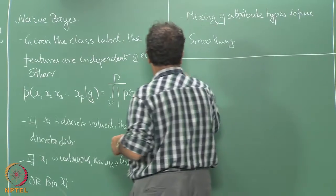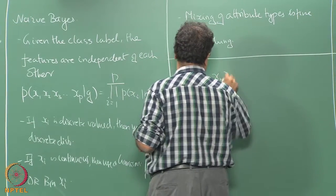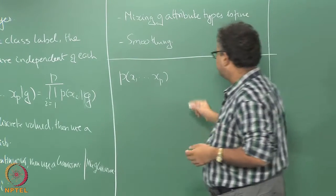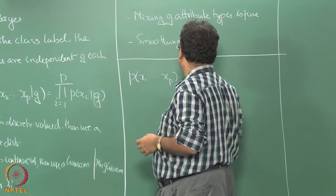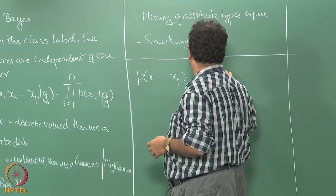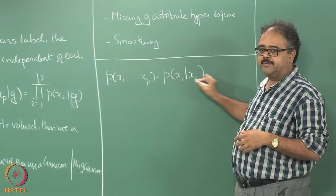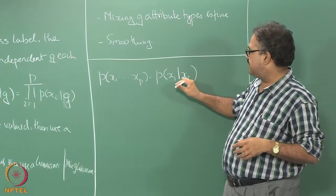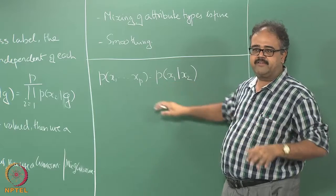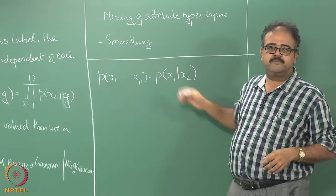Think of something like this: I want to look at this joint distribution x1 to xp. What I am saying is that given x2, x1 is independent of everything else. If you know the value of x2, x1 is independent of everything else.